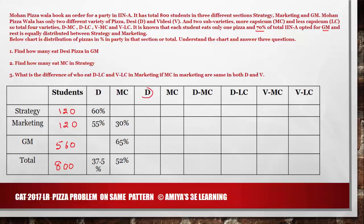Now we work on Desi Pizza. Strategy: 120 and 60% is nothing but 72. Marketing: 120 and 55% is nothing but 66. Total: 800 and 37.5% is nothing but 300. So total Desi Pizza eaters are 300, in which Strategy is 72 and Marketing is 66, giving a subtotal of 138. GM Desi Pizza is therefore 300 minus 138, which is 162. This was the missing data in our chart.